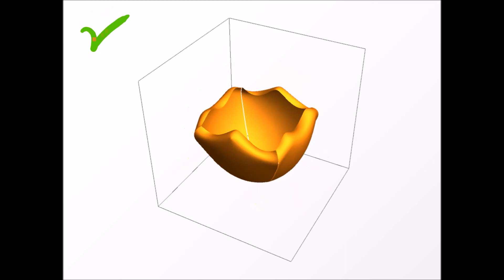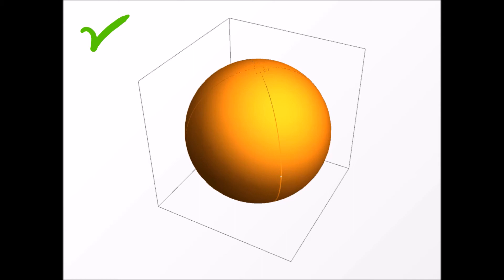If, on the other hand, the unit vector spans the whole sphere as the momentum spans the Brillouin zone, then the winding number is non-zero, thus signaling a topological phase.